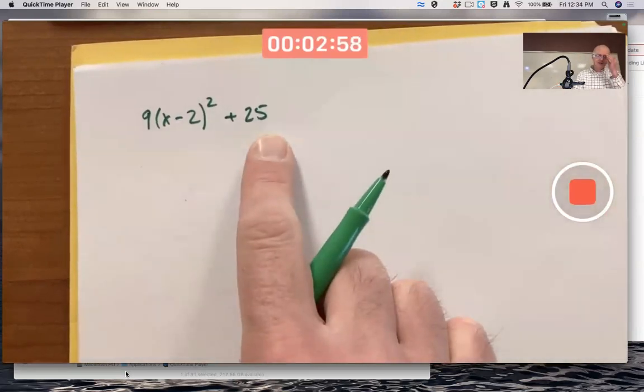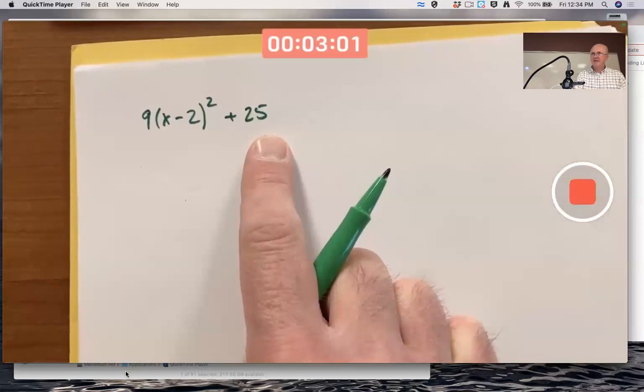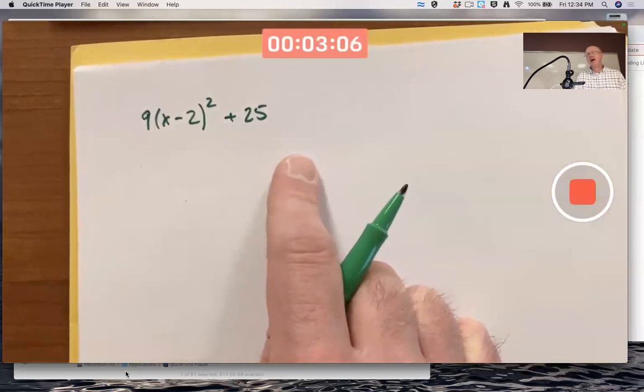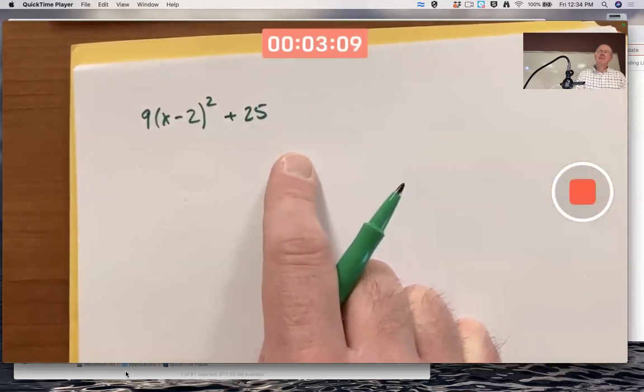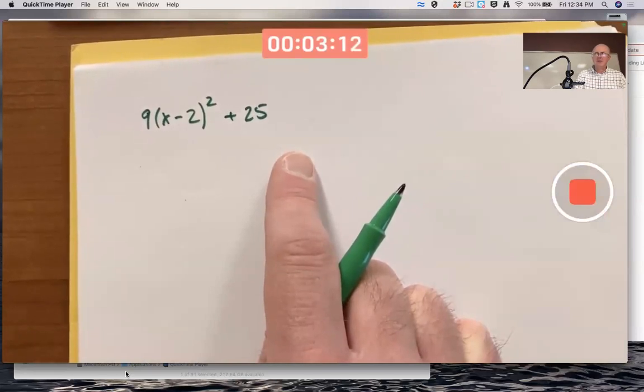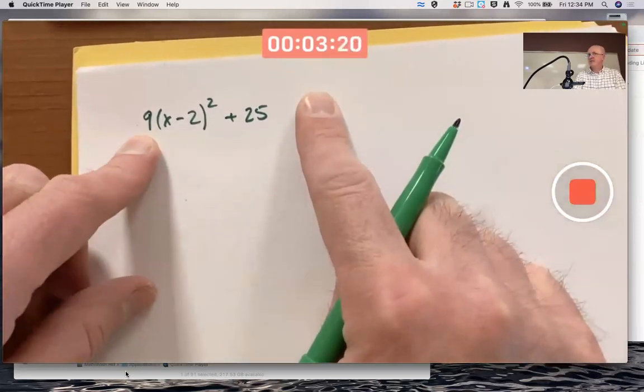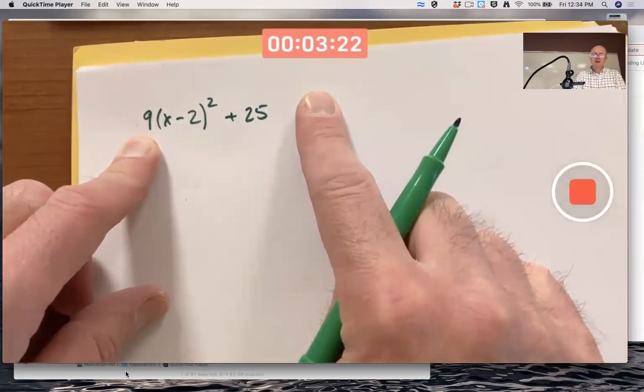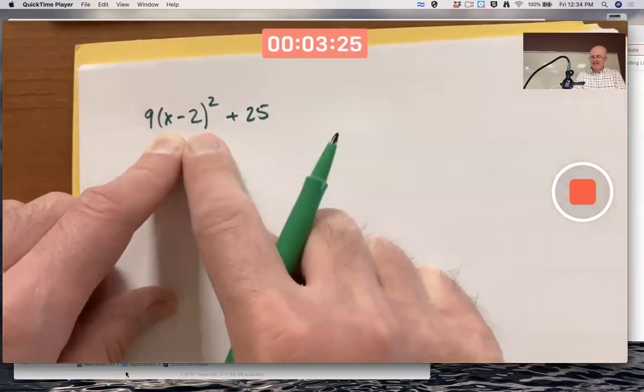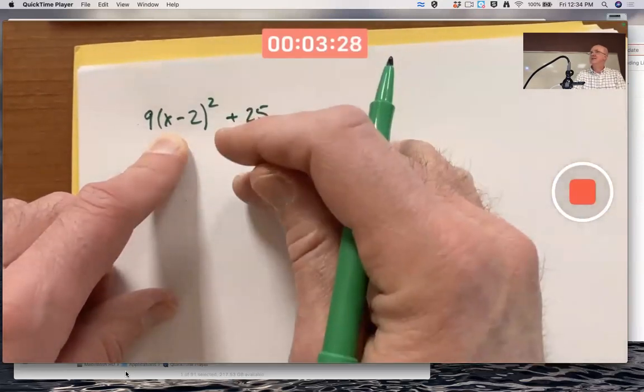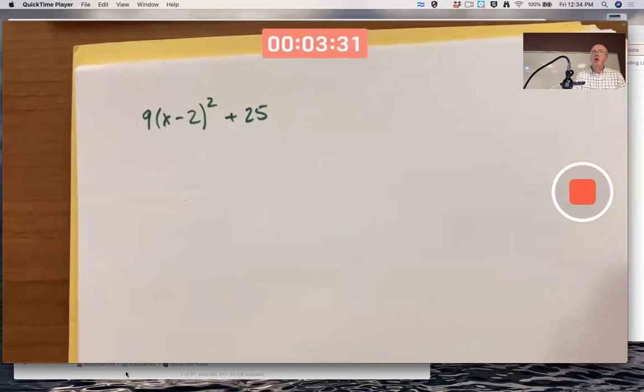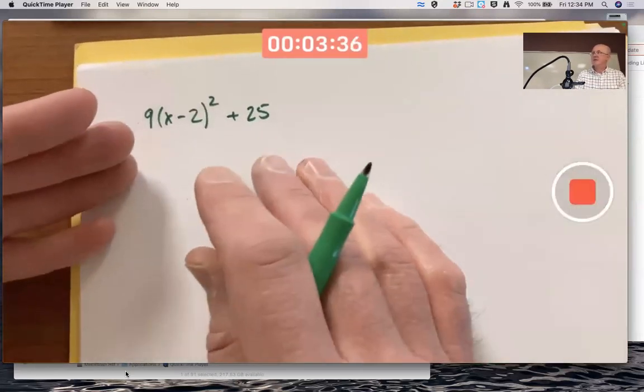That's an example of a quadratic function that's got no real number roots. If you set this equal to zero and try to solve for x, you'd have to subtract 25 from both sides and then take the square root. But that means taking the square root of negative 25, which is not a real number.